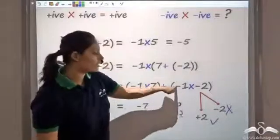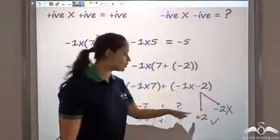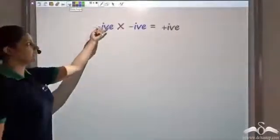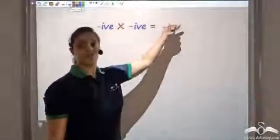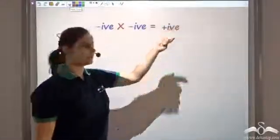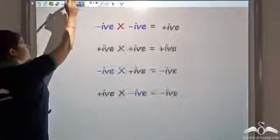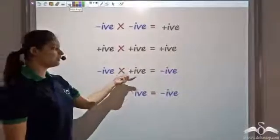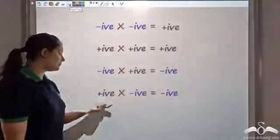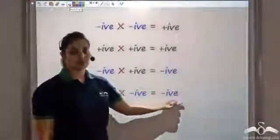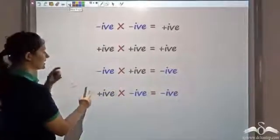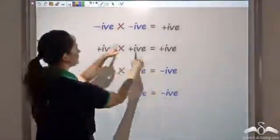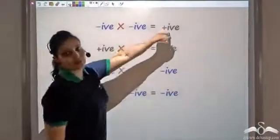So we get that negative multiplied by negative gives positive. Positive times positive is positive. Negative times positive is negative, and positive times negative is negative. Whenever one of the terms is negative you get a negative result. When both terms are negative you get a positive.